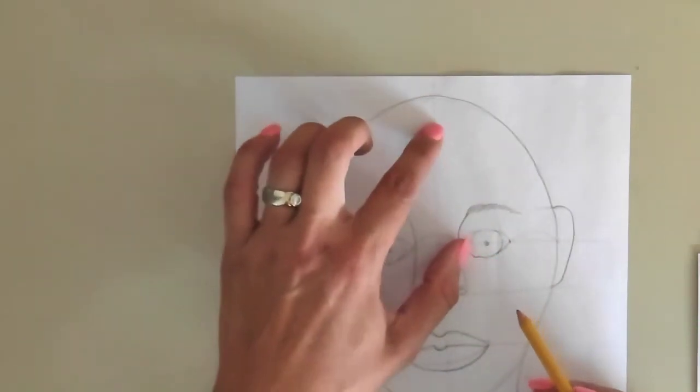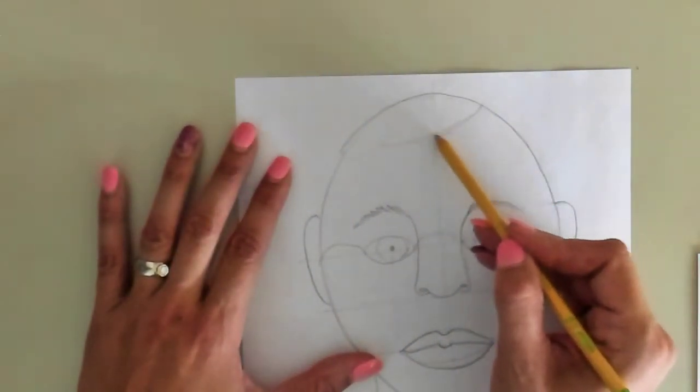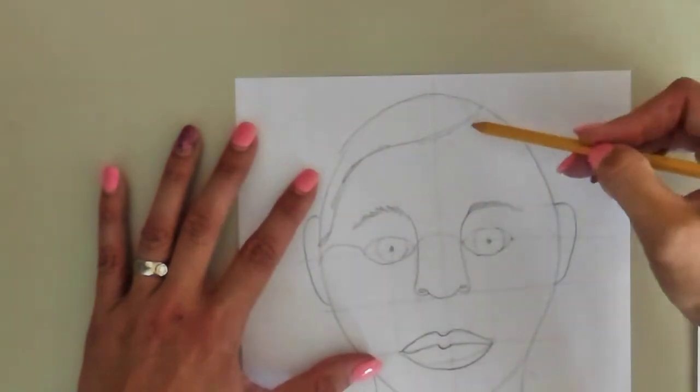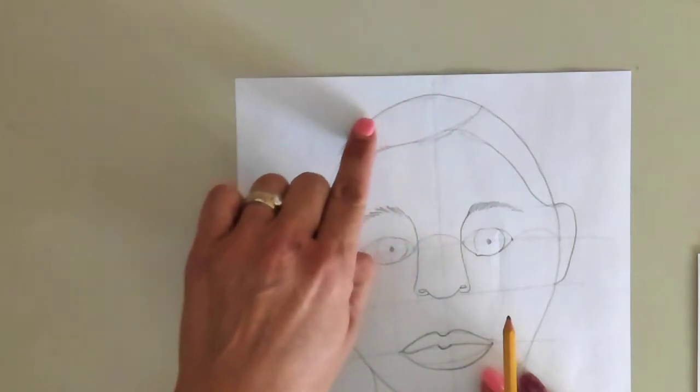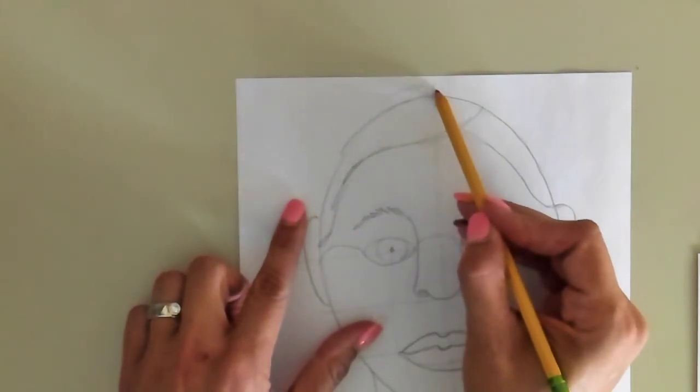Up here is space for forehead and hair. So you're going to kind of look in the mirror at your hairline and draw that in place, keeping in mind you don't have hair just along the top of your head, but above your head as well.